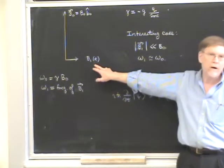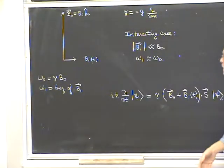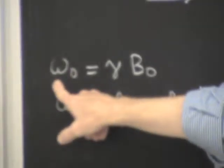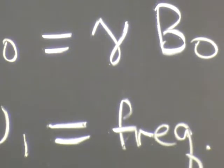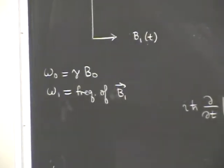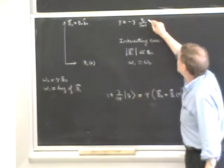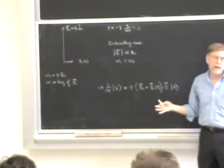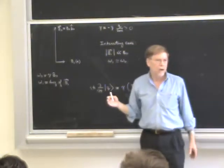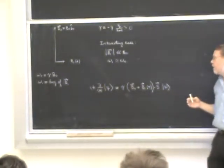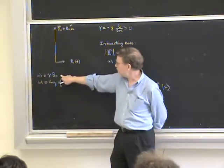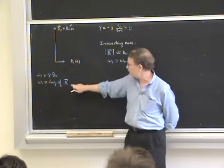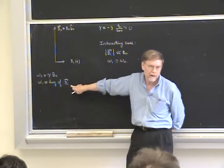The small field B1 is regarded as a perturbation. The frequency of precession in the background field is called omega-0, which is gamma times B0, where gamma is minus G times the charge divided by 2mc. We assume gamma is positive. Note the difference in notation: omega-0 is the precession frequency in B0, whereas omega-1 is the frequency of the time dependence of B1, independent of the magnitude of B1.